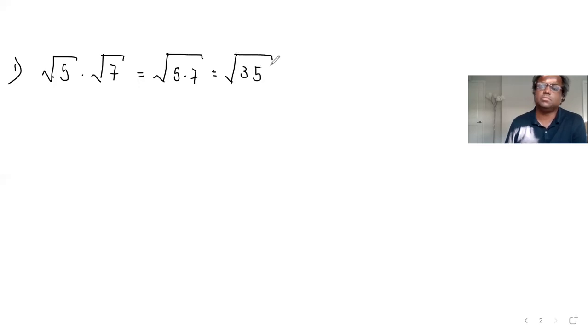So let's check the questions. So if you have square root of 5, square root of 7, which is I can write it as 5 times 7, which is square root of 35. As simple as it is.